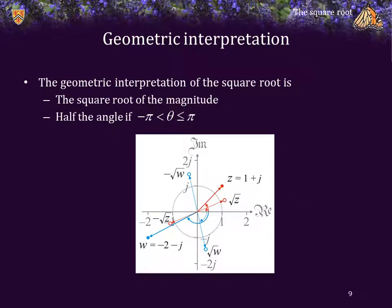Let's look at the geometric interpretation. In the first quadrant, we see z is equal to 1 plus j. The principal square root of z is also in the first quadrant, and its additive inverse is in the third quadrant. Similarly, in the third quadrant, we see w is equal to negative 2 minus j. Its principal square root is in the fourth quadrant, and its magnitude is the square root of the magnitude of w, and its angle is half the angle of w. The other square root of w is in the second quadrant, and it's just the additive inverse of the one we found in the fourth quadrant.